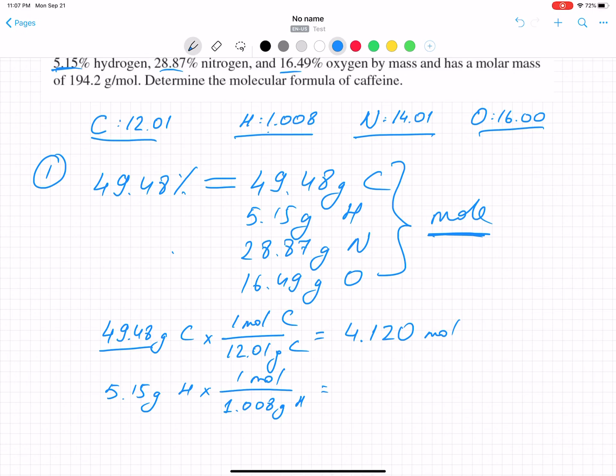And since you start with four significant figures, yes, we have those four significant figures. Let's find our answer in four significant figures here. 4.120 mole. That's mole of carbon. The next one, 5.15 over 1.008, you will find 5.11 mole. This is hydrogen.